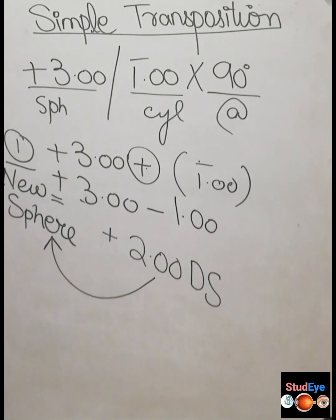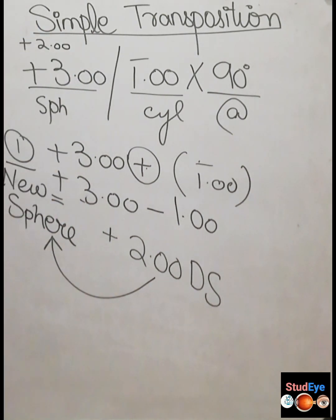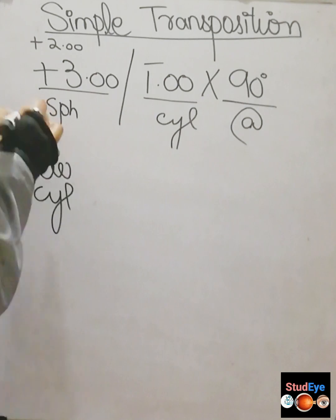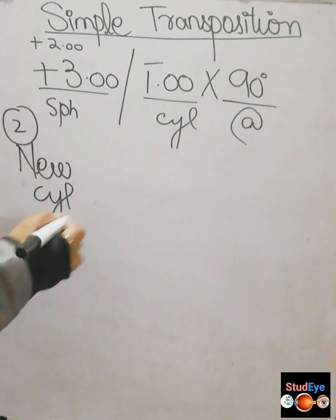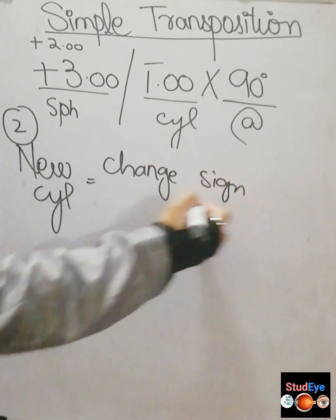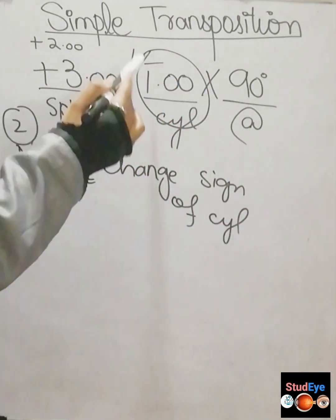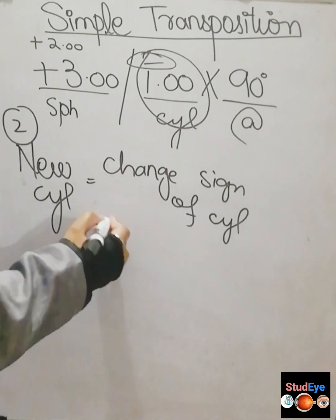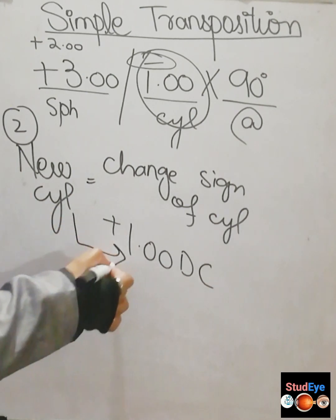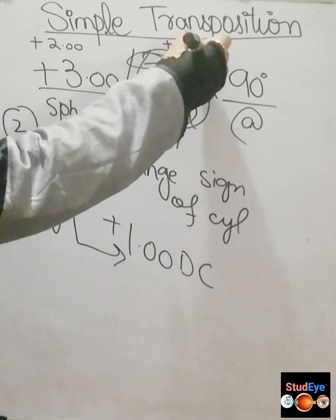Now for Step 2, we need to find the new cylinder of the transposed prescription. We simply change the sign of the cylinder. Here the original cylinder is minus 1, so we change the sign and minus turns into plus. The new cylinder is plus 1 diopter.